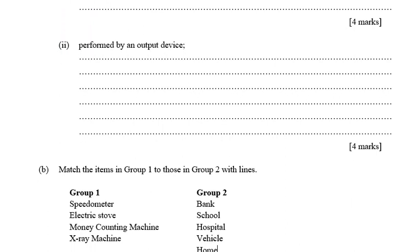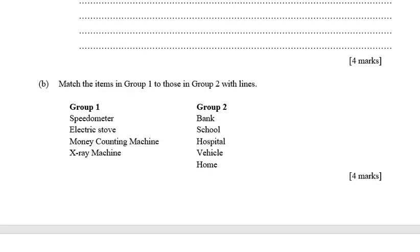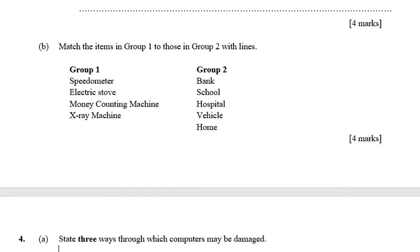Next: functions performed by an output device. One: it indicates what the computer needs from us — for example, the monitor shows messages from the computer, such as a virus alert from the antivirus. Two: it provides processed and stored data for users.